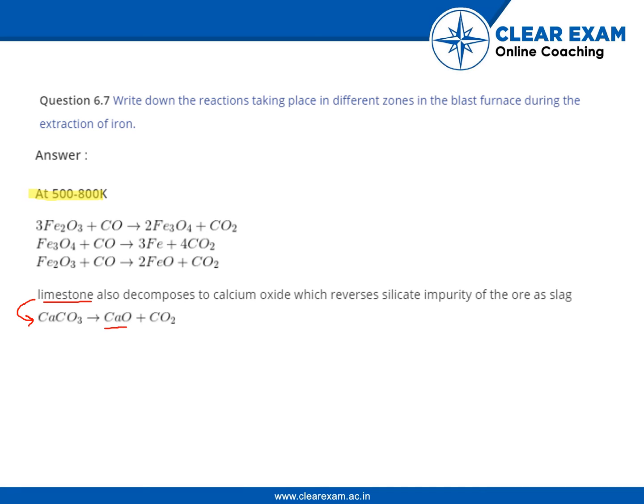At 900 to 1500 Kelvin, these three reactions take place: C plus CO2 gives carbon monoxide, FeO plus CO gives Fe plus carbon dioxide, and CaO (produced from limestone decomposition) reacts with SiO2 to give CaSiO3 slag.